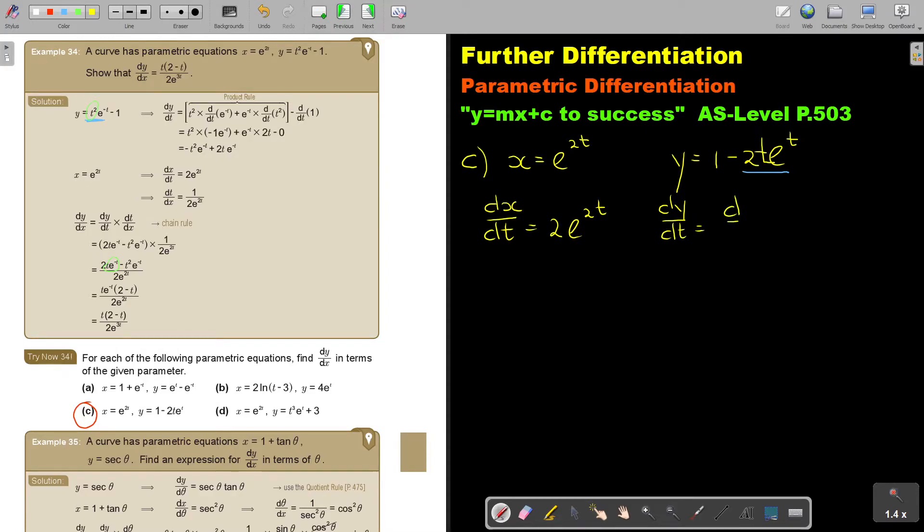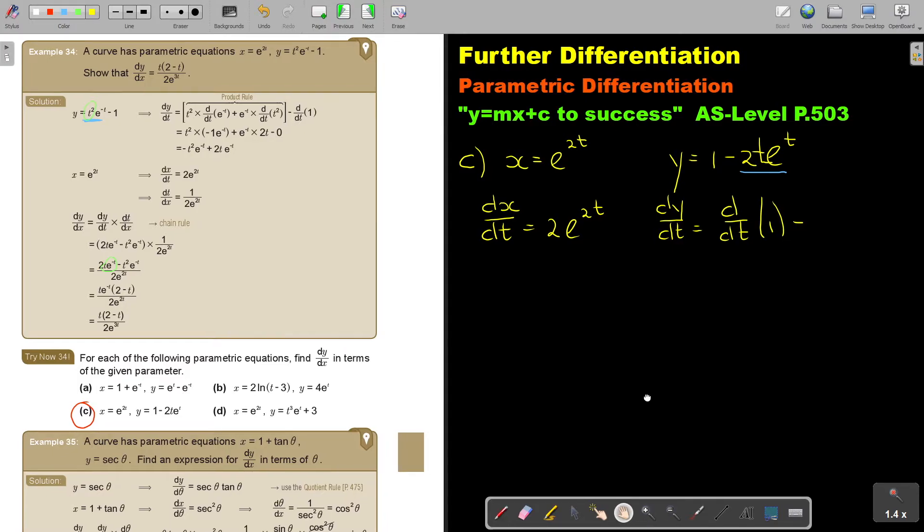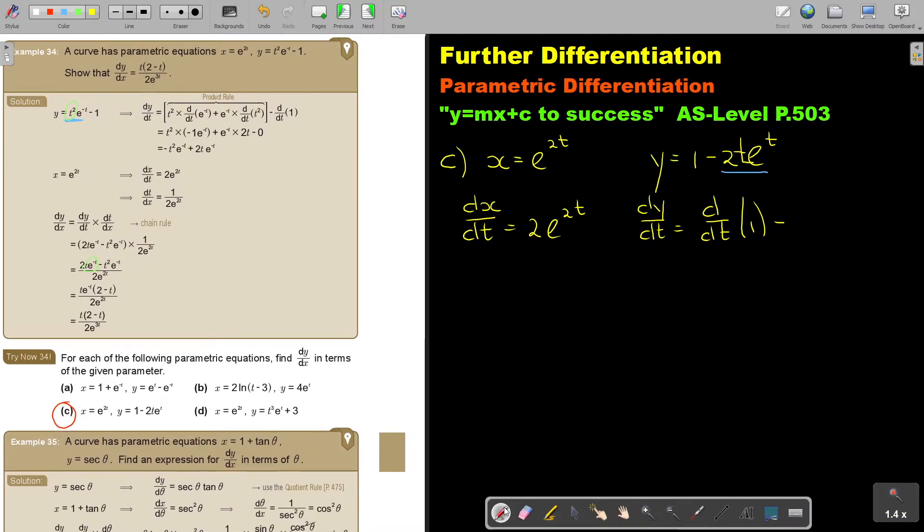So it's dy over dt. And now it's d over dt. 1 minus. And then this is my product.